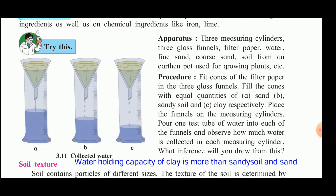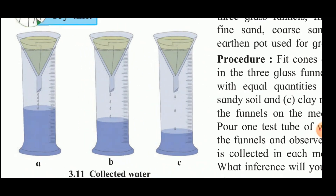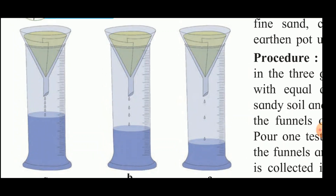Fit cones of filter paper in three glass funnels. Fill the cones with equal quantities of sand, sandy soil, and clay respectively in the three funnels. Place the funnels on the measuring cylinders as shown in the figure. Pour one test tube of water into each of the funnels and observe how much water is collected in each measuring cylinder.